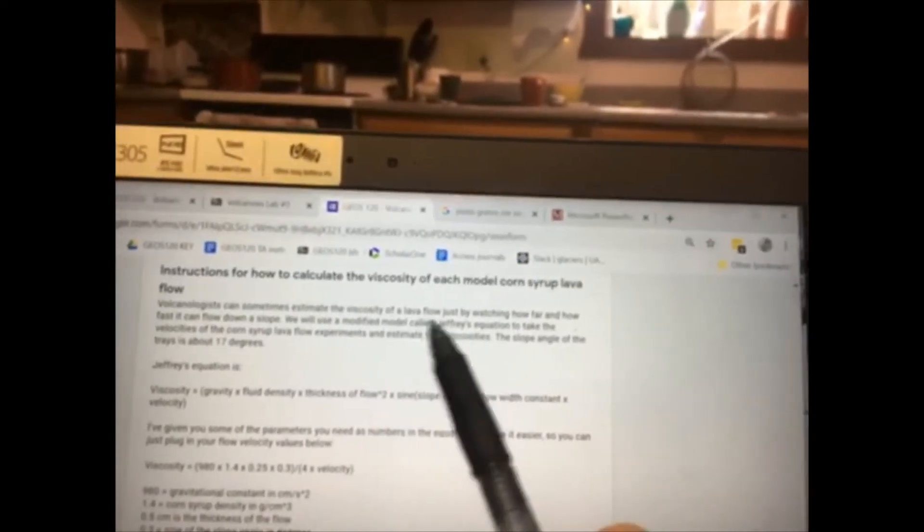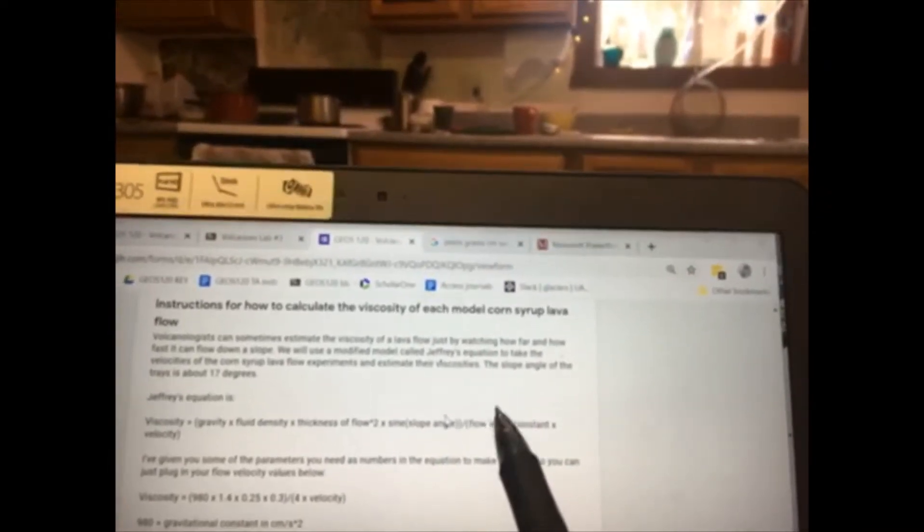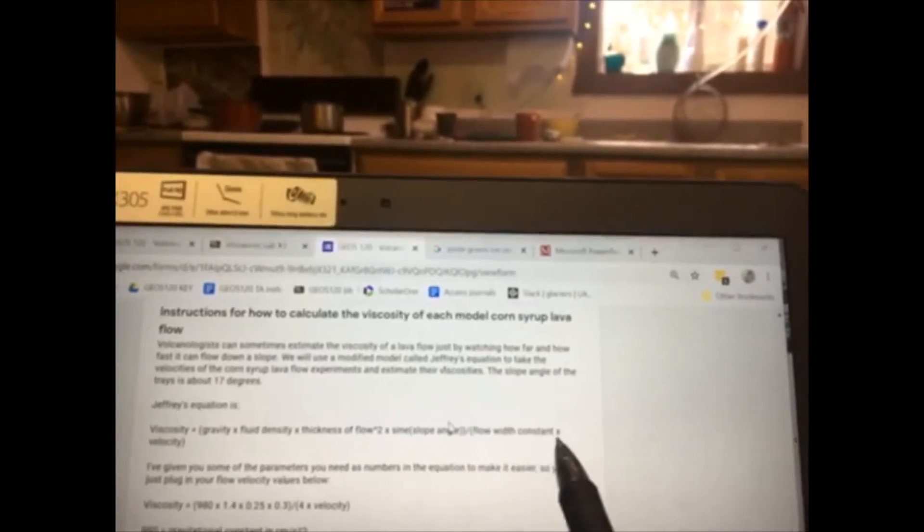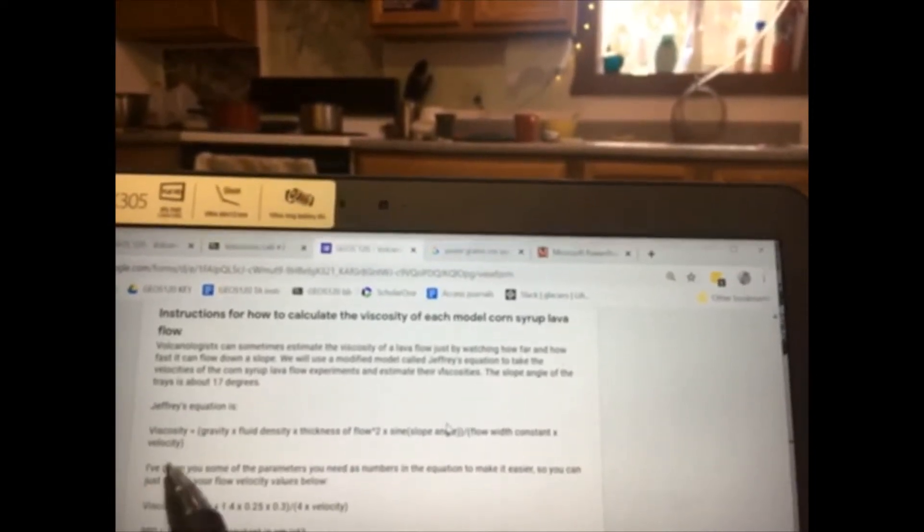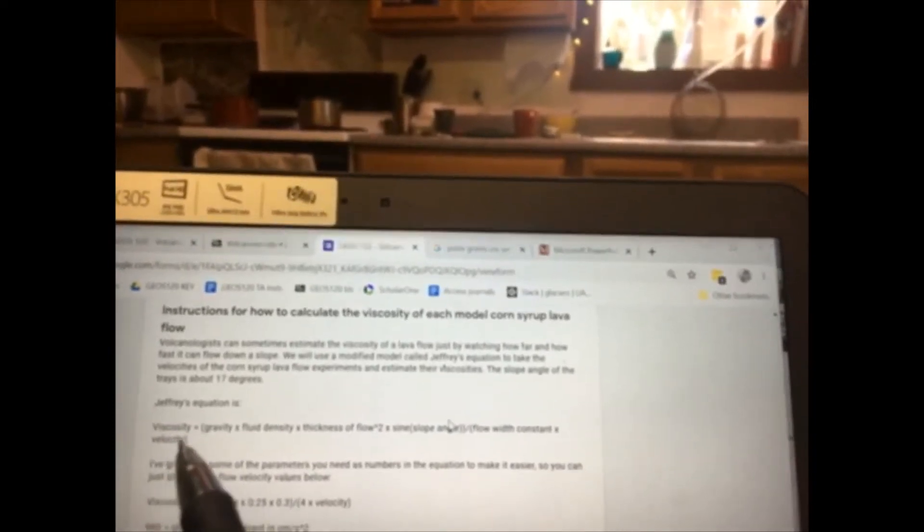times sine of the slope angle divided by a flow width constant times velocity. So flow width constant times velocity, those are both in the denominator.